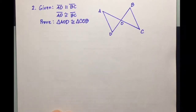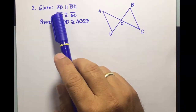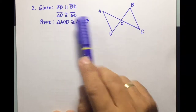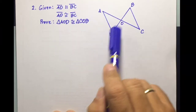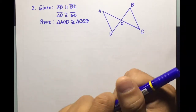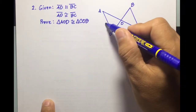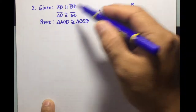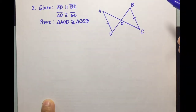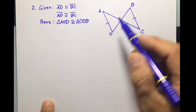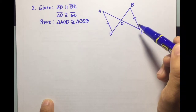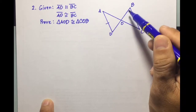Example number two. Given that line segment A-D is parallel to line segment B-C, and line segment A-D is congruent to line segment B-C, we're going to prove that triangle A-O-D is congruent to triangle C-O-B.